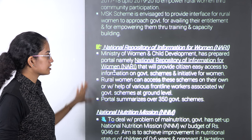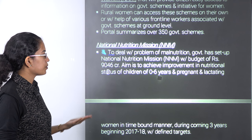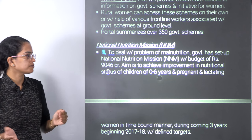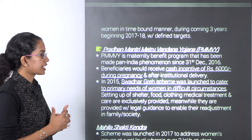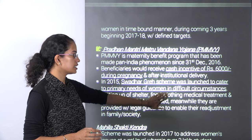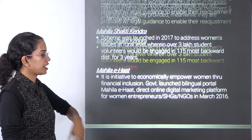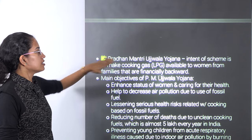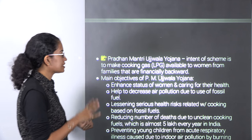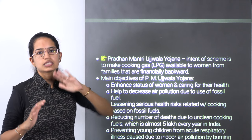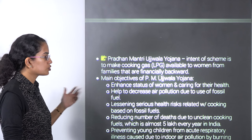The National Nutrition Mission, also known as Poshan Abhiyan, talks about improving nutritional standards for children aged 0-6 years and pregnant and lactating women. The Pradhan Mantri Matru Vandana Yojana provides a cash incentive of Rs. 6,000 during pregnancy. The Swadhar Greh scheme has been launched for women in difficult circumstances. Mahila eHaat is a platform where women can bring their produce and sell it in the market. The Pradhan Mantri Ujjwala Yojana talks about LPG connections and making cooking gas available to every household, improving the standard of women in rural areas, making the atmosphere air-pollution-free, and reducing deaths due to unclean cooking fuels.